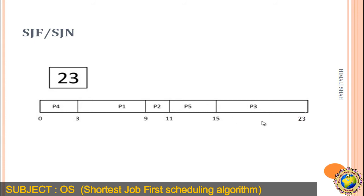15 plus 8 equals 23, so P3 finishes at time 23. To summarize, the finish times are: P4 = 3, P1 = 9, P2 = 11, P5 = 15, and P3 = 23.